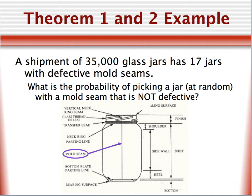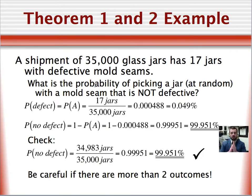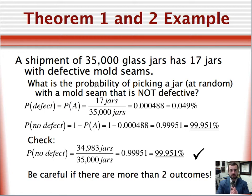Okay, so let's apply these first two theorems. Suppose that we had a shipment of 35,000 glass jars. 17 jars have defective mold seams. We need to solve what is the probability of picking a jar at random with a mold seam that is not defective. So, I'll give you a minute to calculate this. Pull out your calculator, smartphone with the calculator, and calculate what is the probability of picking a jar that does not have bad mold seams.